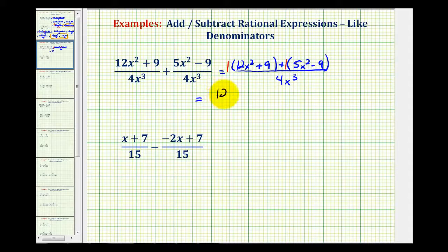This would give us 12x² + 9 + 5x² - 9, all over our common denominator of 4x³. Now we'll combine the like terms in the numerator. Again, our denominator is going to stay the same, 4x³.